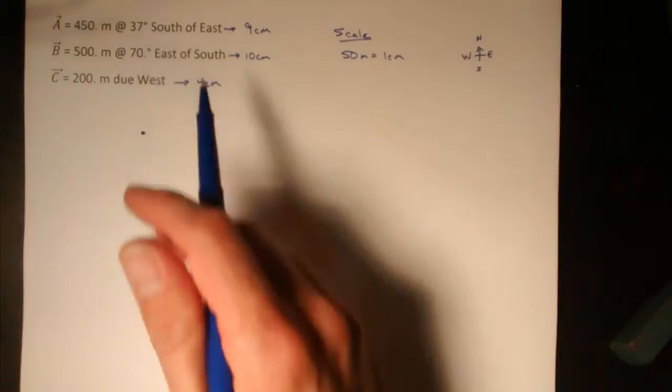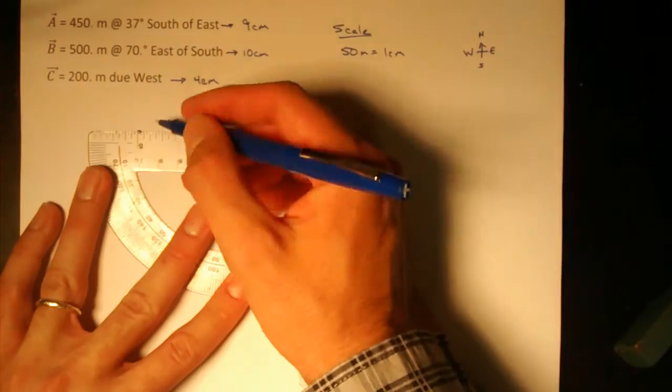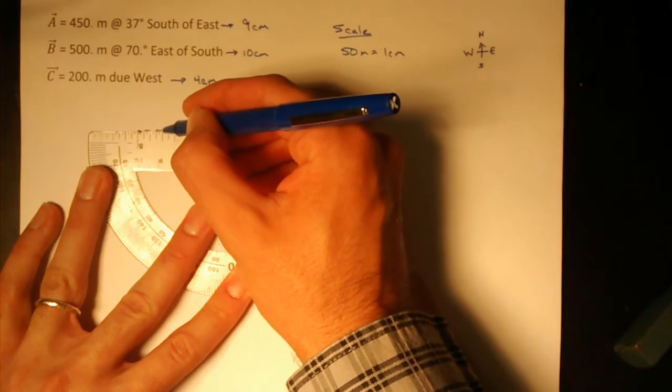Now vector A is 37 degrees south of east. So I'll start by drawing a dotted line that's pointed eastward.